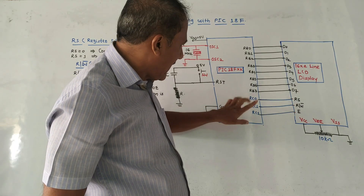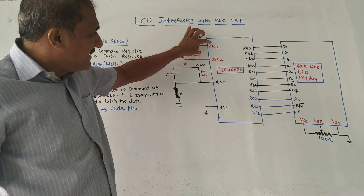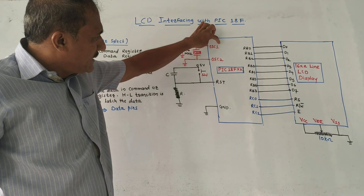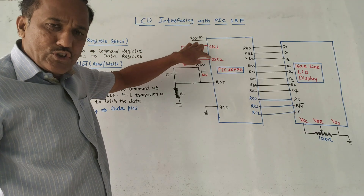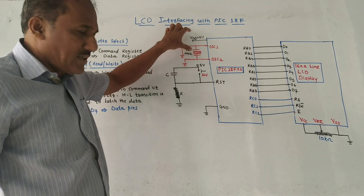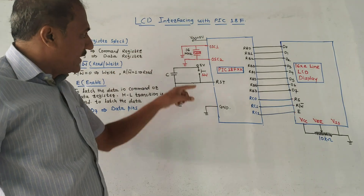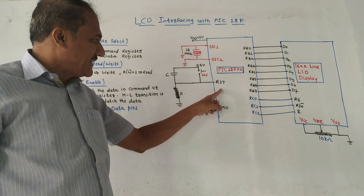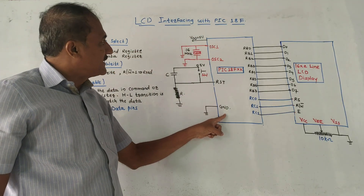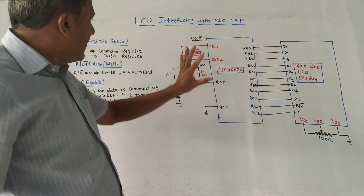We already discussed that OSC1 and OSC2 — between these two pins we have to connect the crystal oscillator. Then this is the reset terminal, this is the ground terminal. These we have already learned.